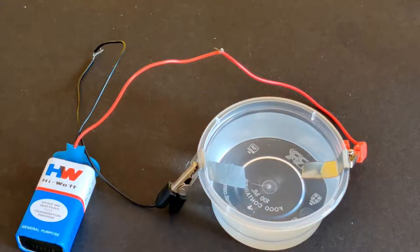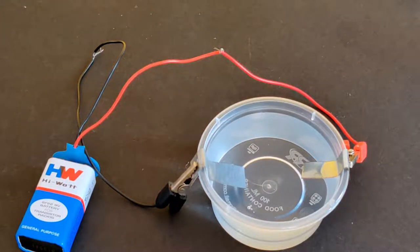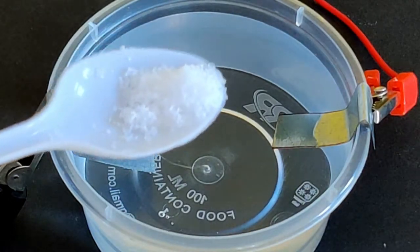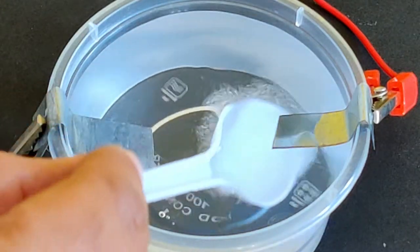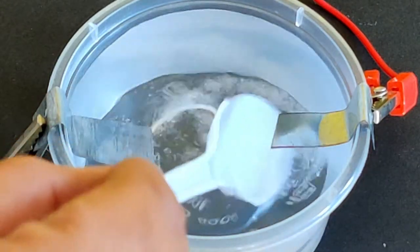You will see there are not many bubbles of gas emerging from either of the electrodes. Now add about half a teaspoon of common edible salt to the water and mix it until it dissolves.